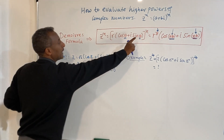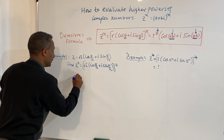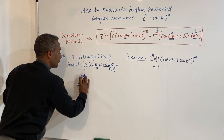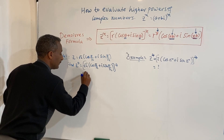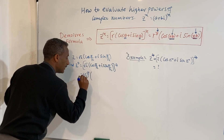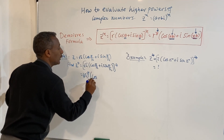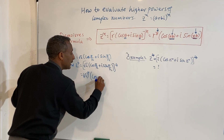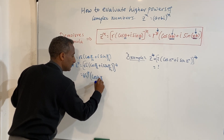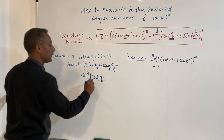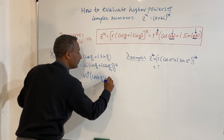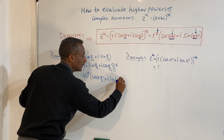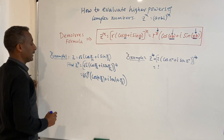Here is the formula. This is the same as r to the power of 4 — root 2 to the power of 4 — times cos of 4 times π/12 plus i sin of 4 times π/12.